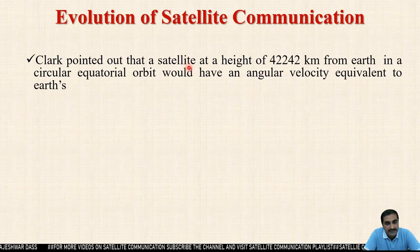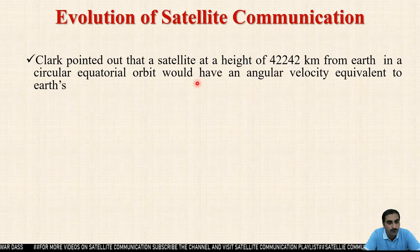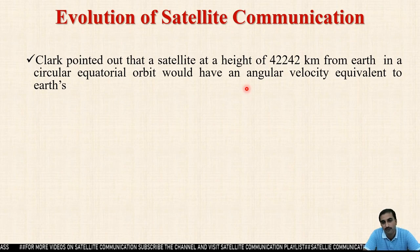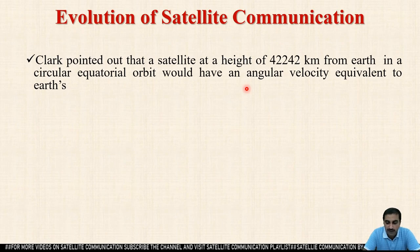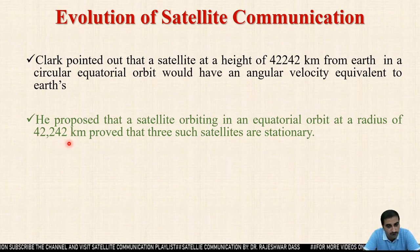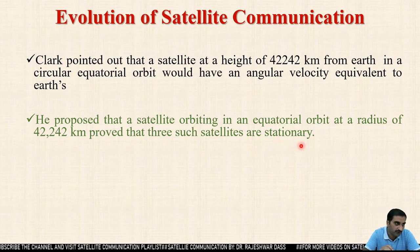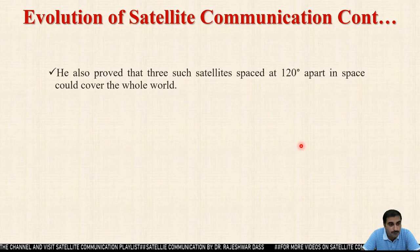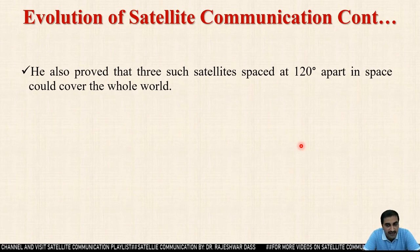Clarke pointed out that a satellite at a height of 42,242 km from the Earth in a circular equatorial orbit would have an angular velocity equivalent to the Earth's rotation velocity, meaning the relative velocity would be zero. He declared that a satellite at 42,242 km altitude would behave as a stationary satellite.